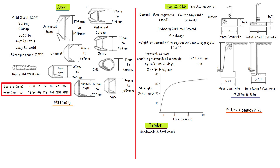Any timber used for structural purposes should be graded for strength. There are two methods for grading strength. Manual inspections can be performed by specially trained inspectors. They assess individual timber for the number and position of defects such as knots and splits, and then stamp each piece with the appropriate grade. The second method of grading is by machine. Each piece of timber is fed through a machine that measures the force required to bend the timber. The piece is then stamped based on the assumption of a relationship between the bending stiffness and the appropriate strength class.